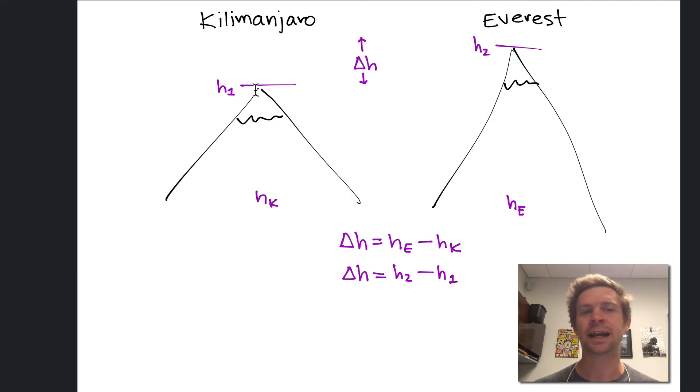Whether I take an airplane from the top of Mount Kilimanjaro to the top of Mount Everest and record the height I'm at as I do so, or I walk down Kilimanjaro, walk over to Everest, and climb up Everest recording my height the whole way, the overall change in height, delta h, is the same.